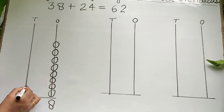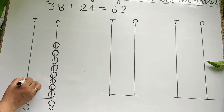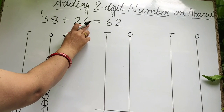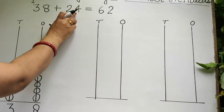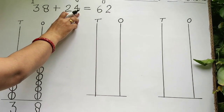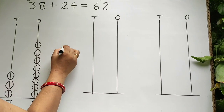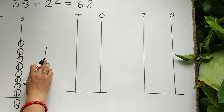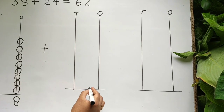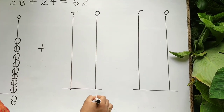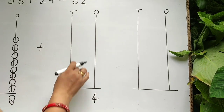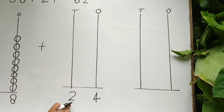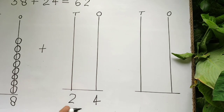Two tens, four ones is equal to 24. Put here plus sign first. After that write under ones 4 and under tens 2. Two tens, four ones is equal to 24.